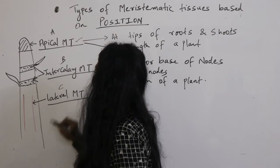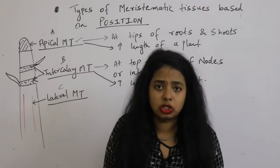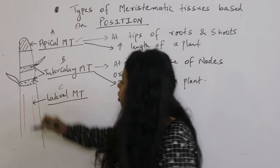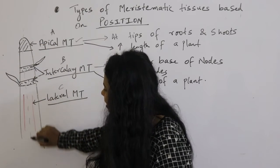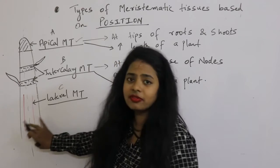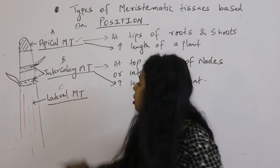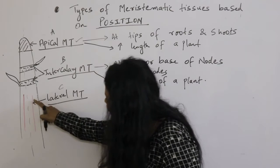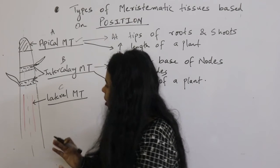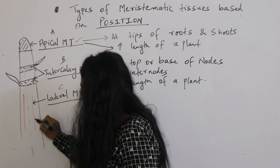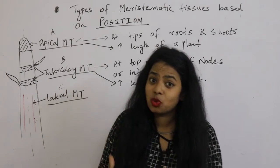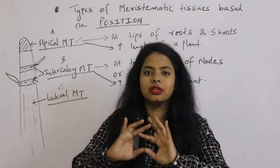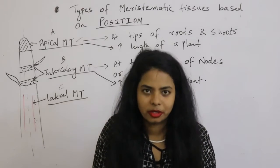The third type is lateral meristematic tissue. Lateral means on either side. So if this is the longitudinal axis, on either side of this longitudinal axis you have lateral meristematic tissue, which is the red part here as you can see. Imagine the cells are added here — what is it going to do?